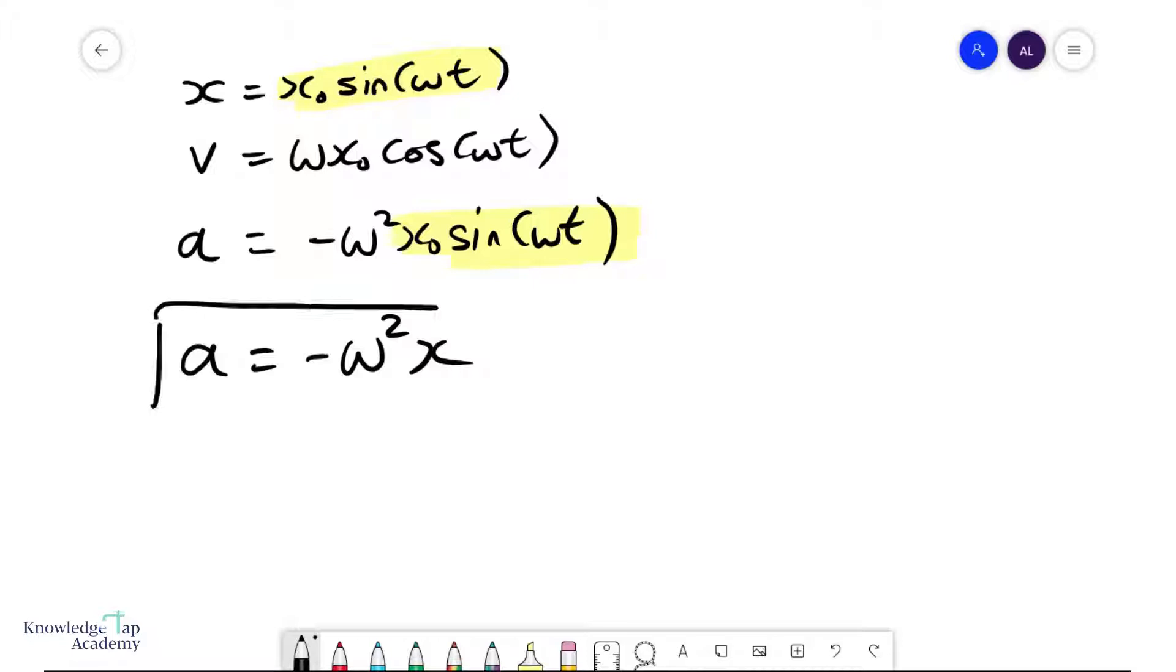Now this is a very important formula because it's what we call the defining formula of an SHM. An object in SHM must have its acceleration directly proportional to x—omega square is a constant—and it must always be opposite to the displacement from equilibrium. That's the significance of this minus sign.